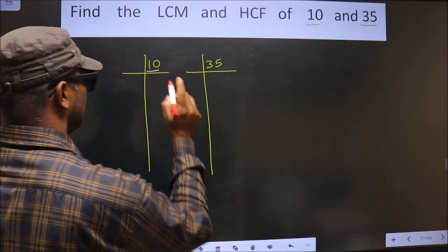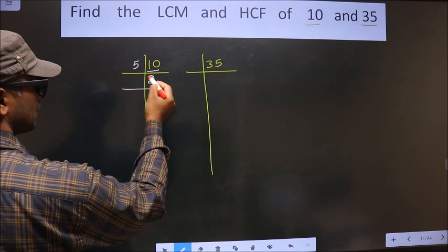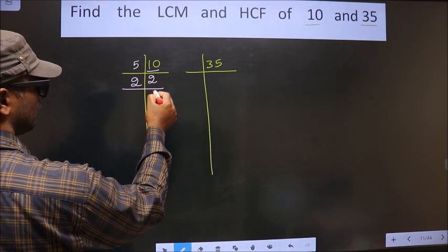Now here we have 10. 10 is 5 times 2 equals 10. Now 2 is a prime number, so we take 2 times 1 equals 2.